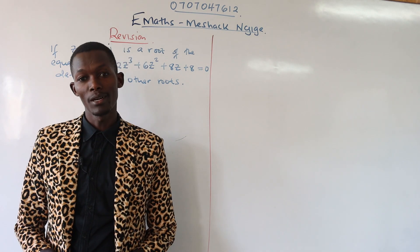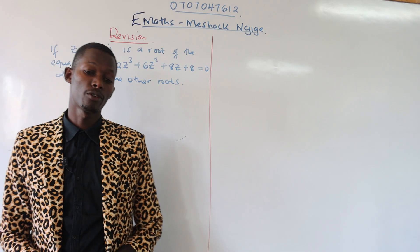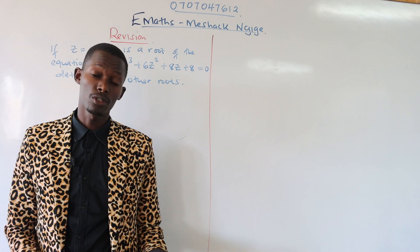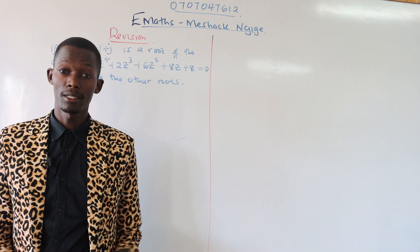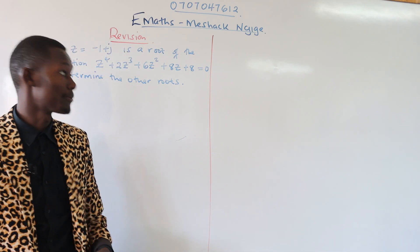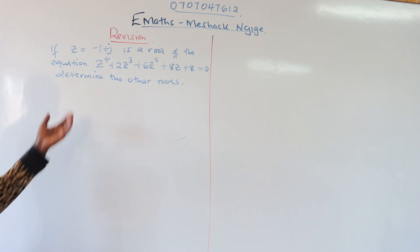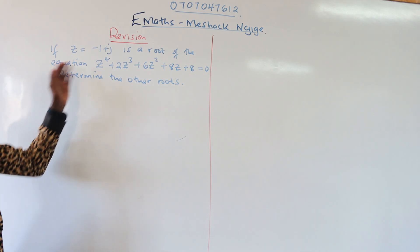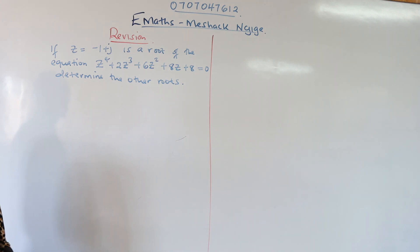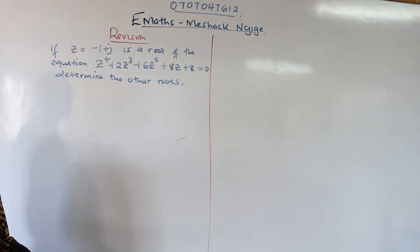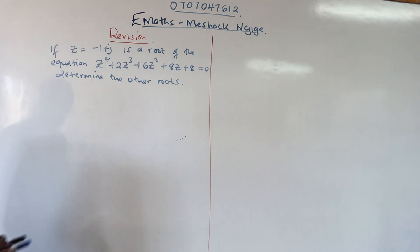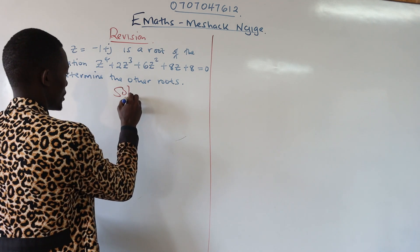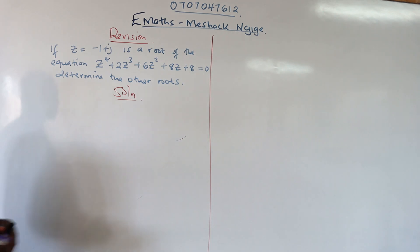Hello learners and welcome again to EMAS with Mesha Kingige. As I promised, today we're going to be checking how to solve and find roots of complex equations. We have a question from a past paper: if z equals negative 1 plus j is a root of z to the power 4 plus 2z cubed plus 6z squared plus 8z plus 8 equals 0, determine the other roots.